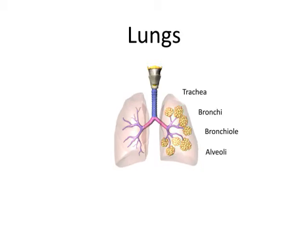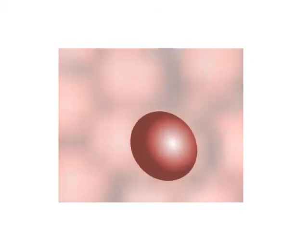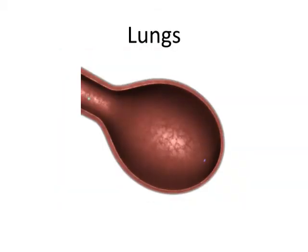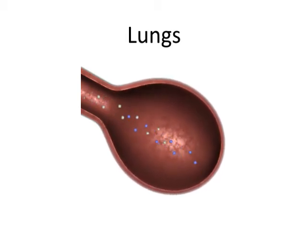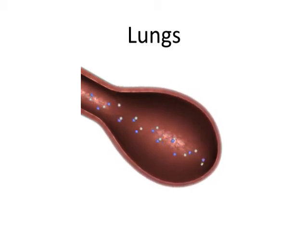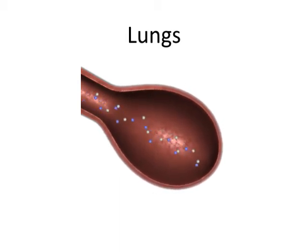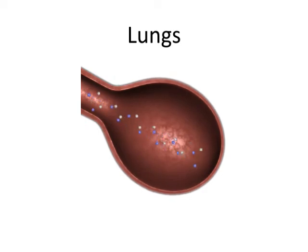Let's have a closer look at these tiny sacs called alveoli. When we breathe in, each air sac inflates like a small balloon and takes in oxygen. When we breathe out, the sac deflates and sends out carbon dioxide from our body.